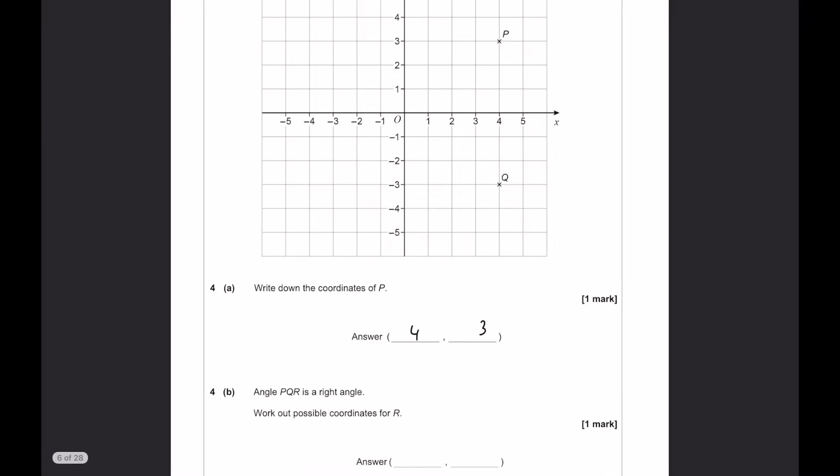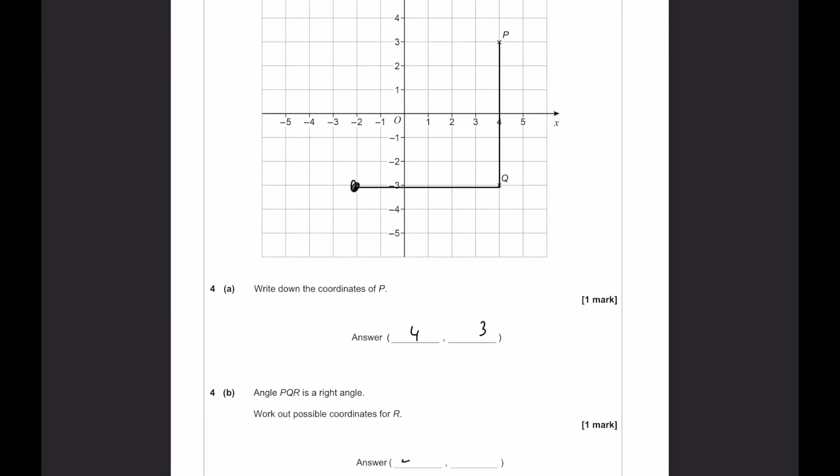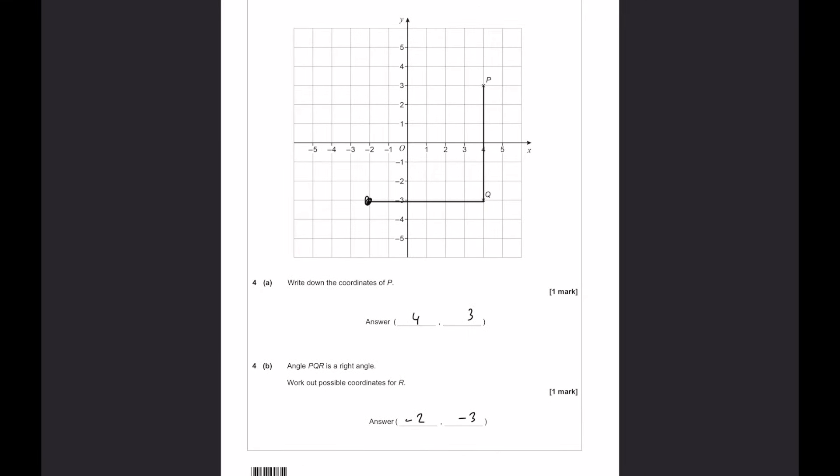Angle p, q, r is a right angle. Work out possible coordinates for r. Well, p, q, r is a right angle. So, r could be right there. So, let's call it minus 2, minus 3. There are going to be other answers for that one. So, let me know down below if you can think of any.